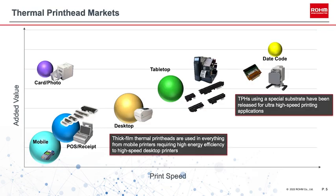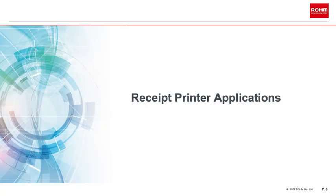This slide shows a chart of thermal printhead applications divided by printing speed on the horizontal axis and added value on the vertical axis. The slowest and smallest mobile printers are on the bottom left, followed by point-of-sale receipt printers, desktop printers, tabletop barcode printers, and a date code printer at 1000 millimeters per second on the far right. Specialty applications such as card and photo printers are in the upper left. At Roam, we develop products using the most suitable technology for each application.